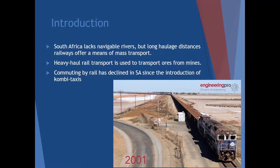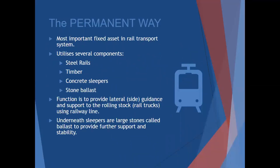Commuting by rail has declined in South Africa since the introduction of Combi taxis. So what is a permanent way? The most important fixed asset in a rail transport system is the permanent way. It utilizes several components, which are steel rails, timber, concrete sleepers, and stone ballast.